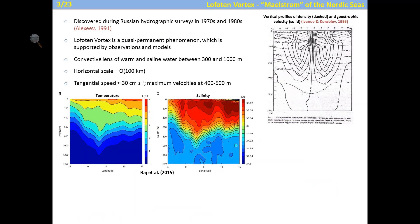The vortex represents a convective lens of warm and saline water between about 300 and 1000 meters depth. Here you see an old figure from a Russian journal paper from 1995 showing the vertical profile of geostrophic velocities and potential density. The core of the vortex is located at depths of about 400-500 meters. More modern observations show a zonal cross-section across the vortex from a paper published last year, with temperature and salinity showing isotherms and isohalines doming down right in the center.